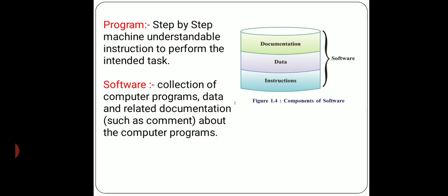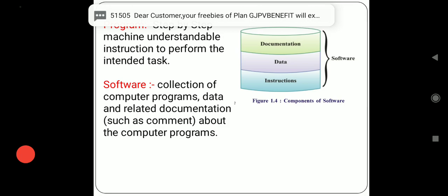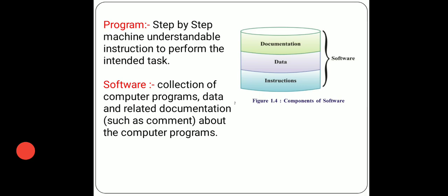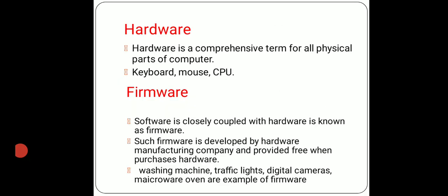Next, software. Definition of software: software refers to an organized collection of computer programs, data, and related documentation about computer programs. Software has three parts: documentation, data, and instructions. In simple language, software means the programs that are installed inside the computer. Word, Excel, PowerPoint — all of these are examples of software.